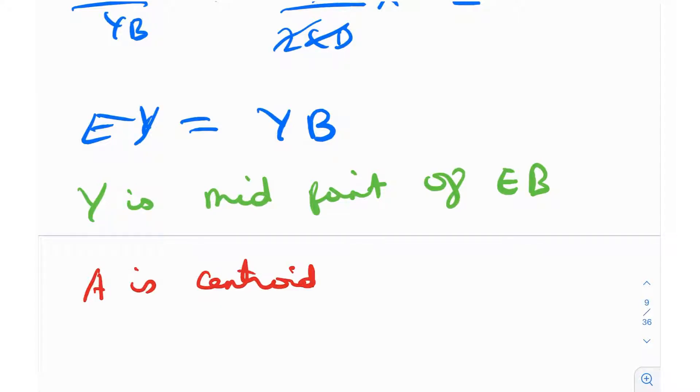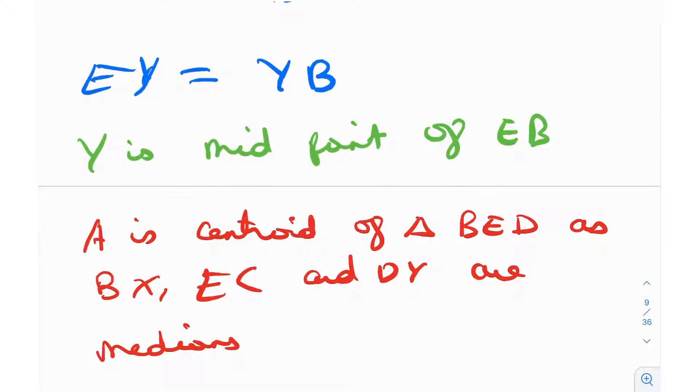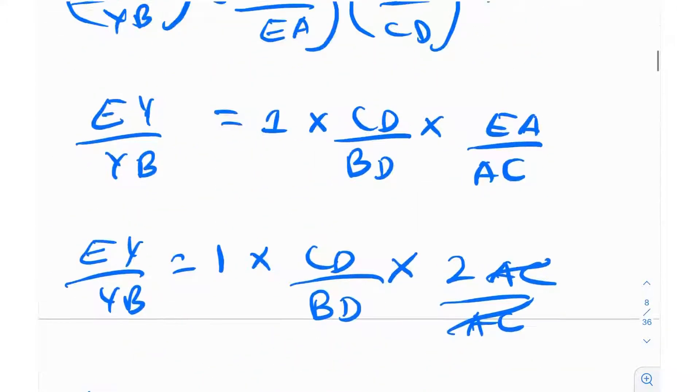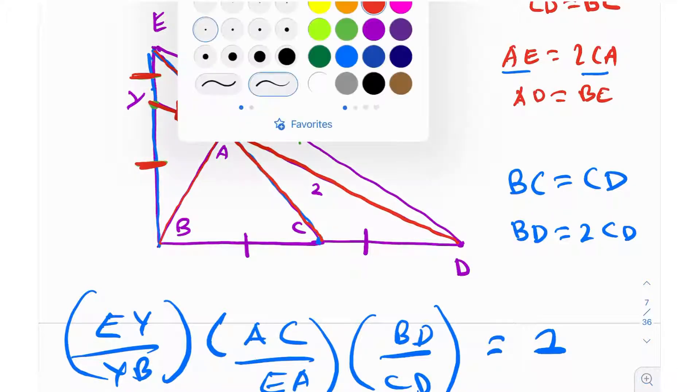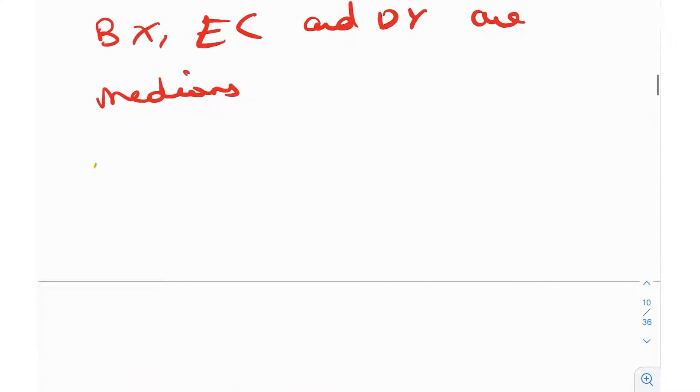As BX, EC, and DY are medians, and point of intersection of medians is called as the centroid. Awesome. Now you know the centroid will divide this into a two-is-to-one ratio, that's a pretty standard property. So basically what is going to happen is that this side will be equal to this side will be equal to this side.